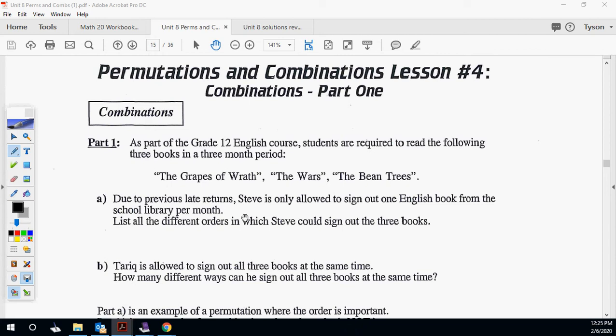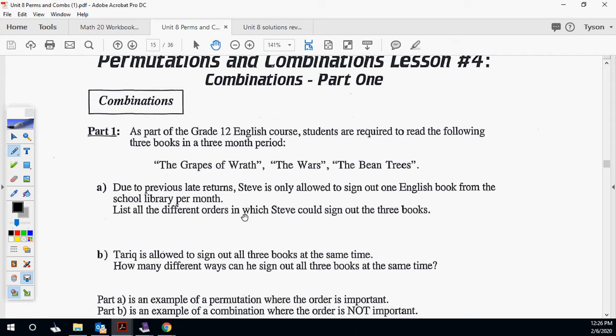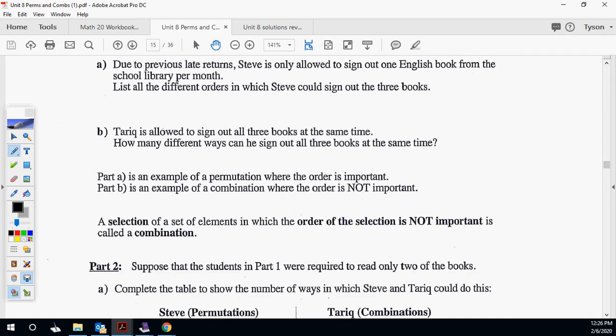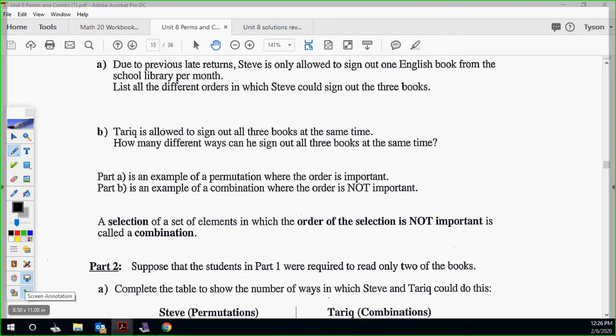So Part 1 is part of a grade 12 English course. Students are required to read the following three books in a three-month period: The Grapes of Wrath, The Wars, and The Bean Trees. Due to previous late returns, Steve is only allowed to sign out one English book from the school library per month. List all different orders in which Steve could sign out three books. We can just use the letters like G, W, and B.